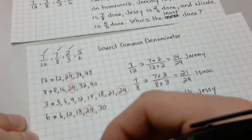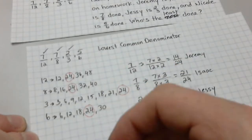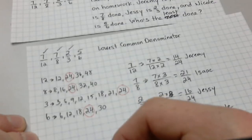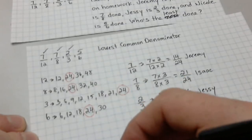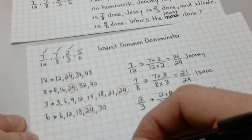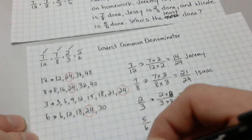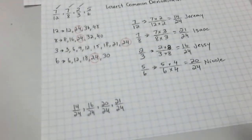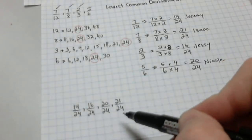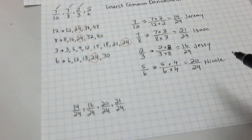So, if my original question was, who has the least done? What I can do now is look at all these numerators and see which one is the lowest number. And, I have seen that Jeremy has the least amount of homework done. So, I'm going to write that one first. 14 out of 24. Then, Jesse has 16 out of 24. Nicole has 20 out of 24. And, Isaac has 21 out of 24. So, Isaac actually has the most done.